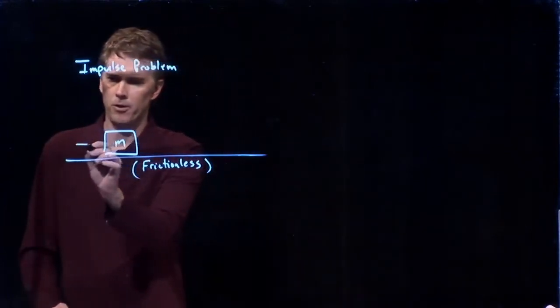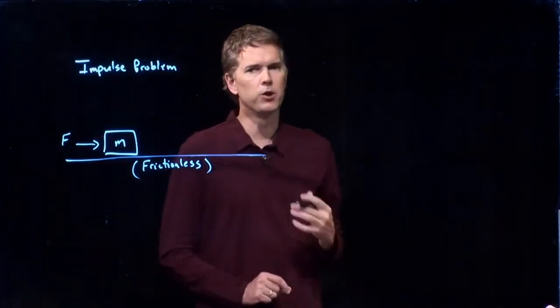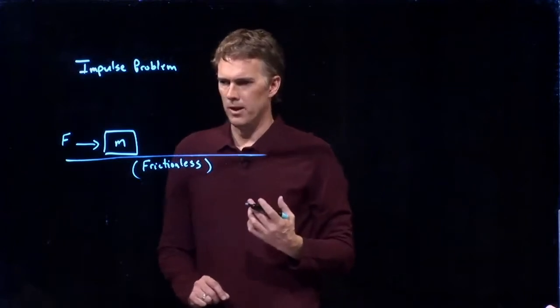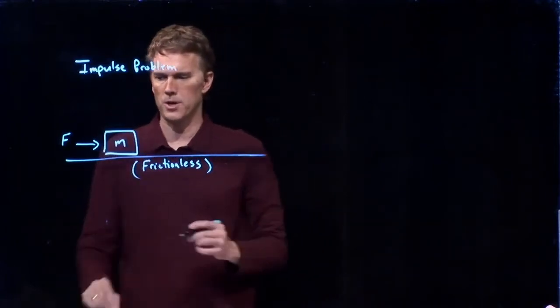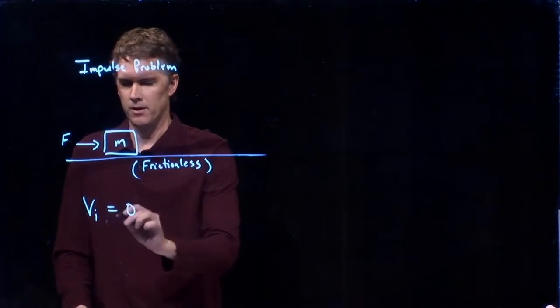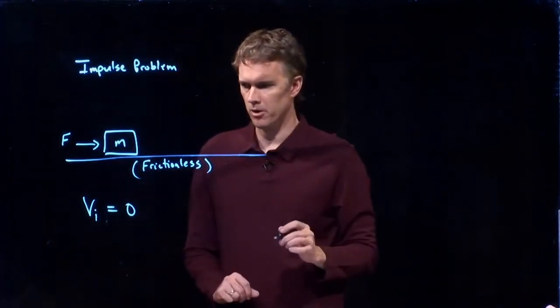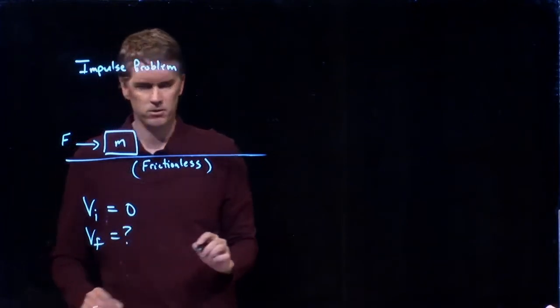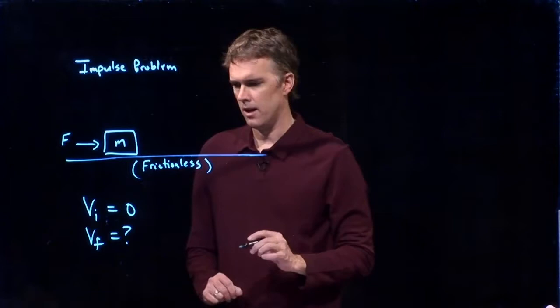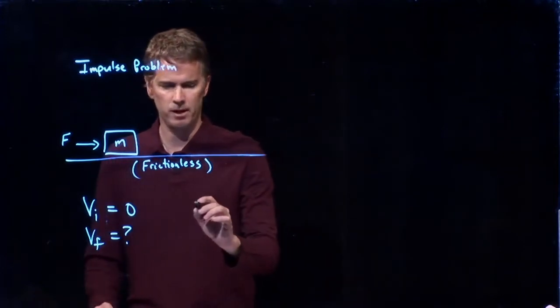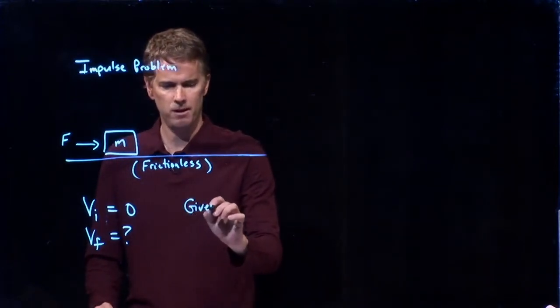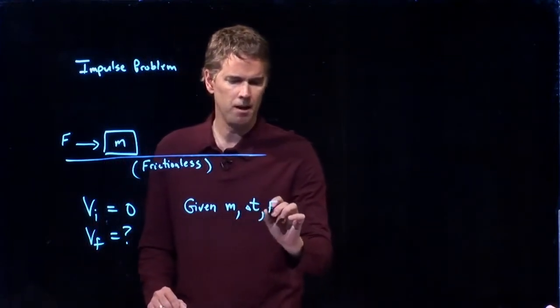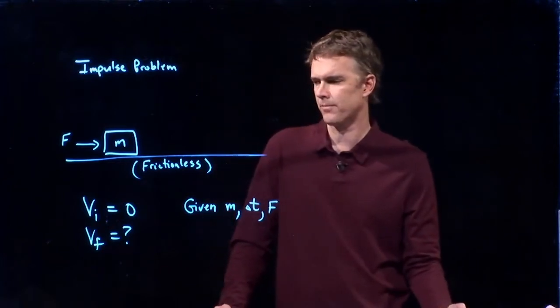And let's say that this is a frictionless surface that it's on. And we're going to apply a force in this direction, and we're going to do it for some amount of time, delta t. If we apply this force on an object that starts at rest, then we can say vi equals zero. We are looking for the final speed of the block, and we will say that we are given some mass, we are given the amount of time that the force is applied, and we are given the force f.